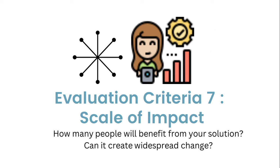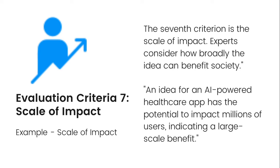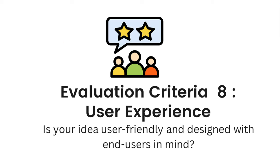The seventh criteria is scale of impact — how many people will benefit from your solution, and can it create widespread change? For example, an AI-powered healthcare app has the potential to impact millions of users, indicating large-scale benefit. Consider WhatsApp — it made photo sharing easy even for people who are not tech-savvy, allowing them to send photos and make purchase decisions. Its scale of impact is enormous. Evaluators look at how broadly your solution can benefit society, since we are building solutions for ministries.